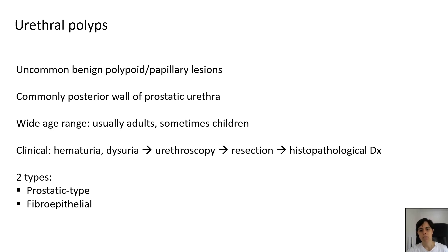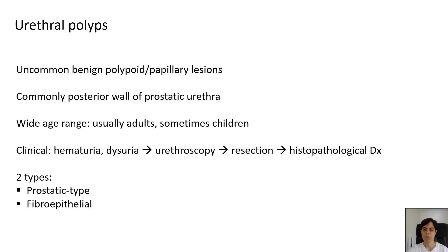Patients typically present with hematuria and/or dysuria, which usually leads to urethroscopy, resection of the papillary lesion, and histopathological diagnosis. There are two types of urethral polyps: the prostatic-type urethral polyp, which I'm going to discuss in this video, and the fibroepithelial urethral polyp, which I'll reserve for another video.